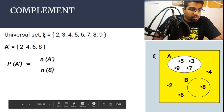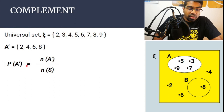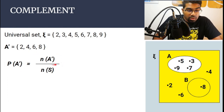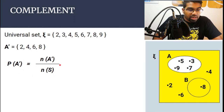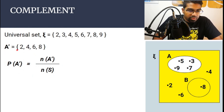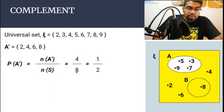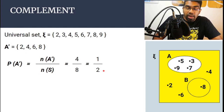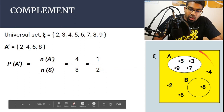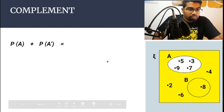The probability of the complement of A is the number of times the complement of A occurs over the total number in the sample space. The complement of A is {2, 4, 6, 8}, so the complement of A also has four elements — four out of eight — giving us one over two.